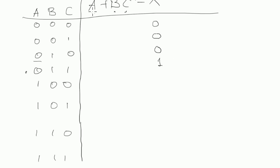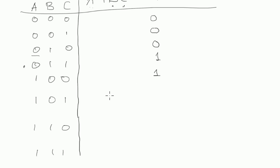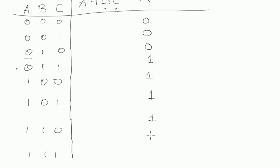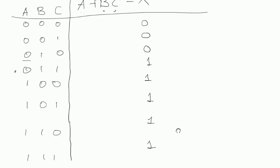Then next one. We have A equals to one. That means the whole expression will be equal to one anyway. Because one plus anything is one. I hope you remember that. One plus anything is one. We just don't care for others. And the same case for our last two cases.